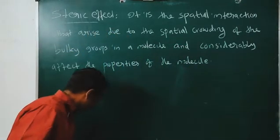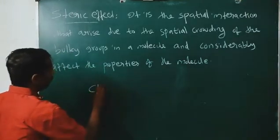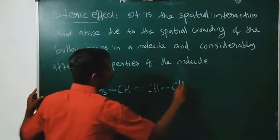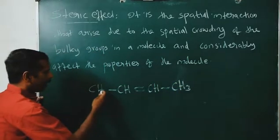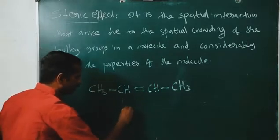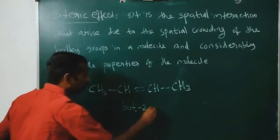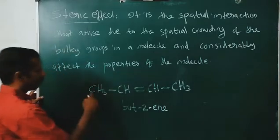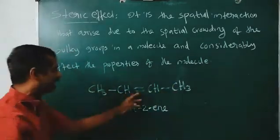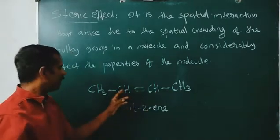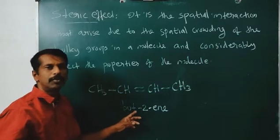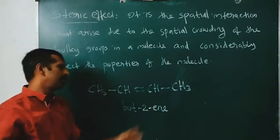Looking here, we can take CH3-CH=CH-CH3. What is this one? In the second carbon, the double bond is starting. Therefore, this one is but-2-ene. It has 1, 2, 3, 4 carbons — 4 carbons, so it is butene. Since the double bond is starting from the second carbon, it will be named but-2-ene.